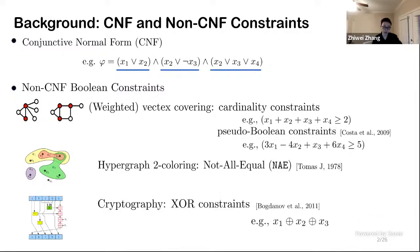In cryptography, XOR constraints play important roles for composing protocols like SHA-1, and I'm sure that you can list other applications to demonstrate the importance of non-CNF Boolean constraints.